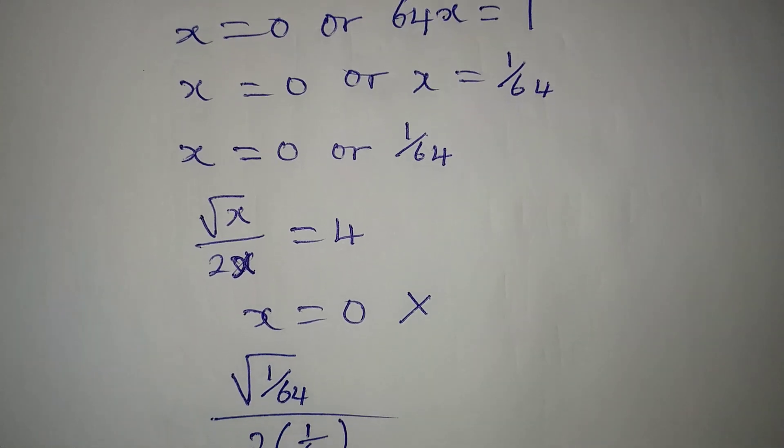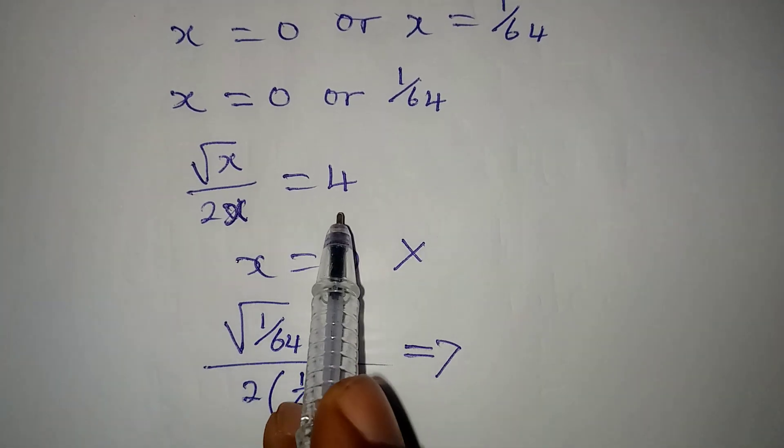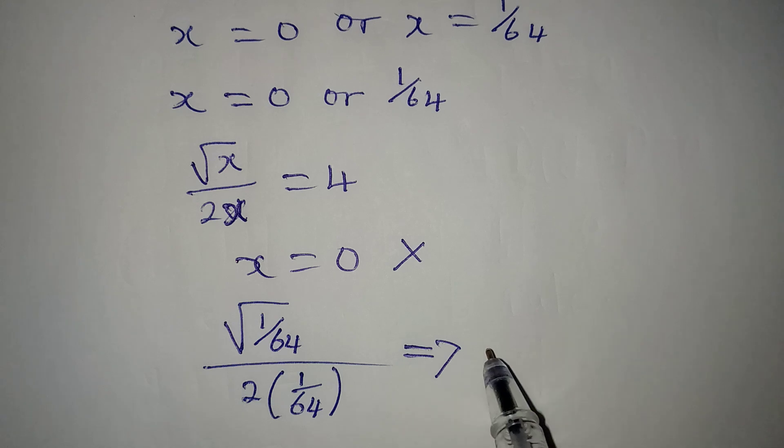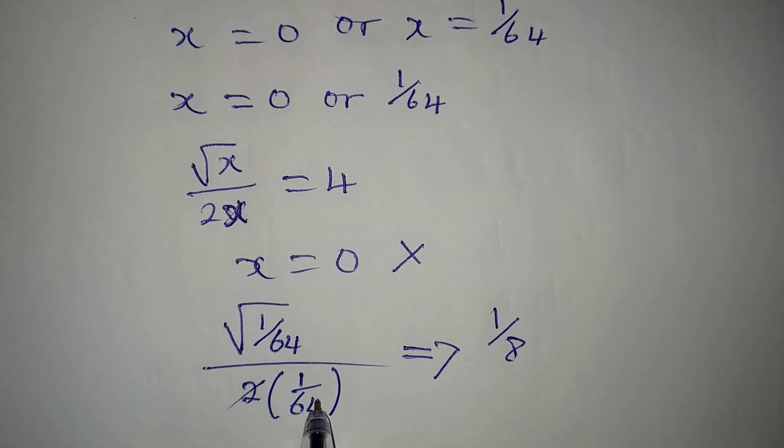Now if we try this, will this give us 4 on the right hand side? This will give: square root of 1 is 1, square root of 64 is 8. Now this will go here.